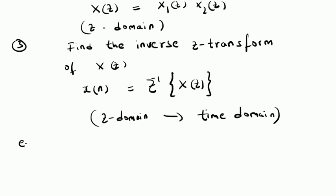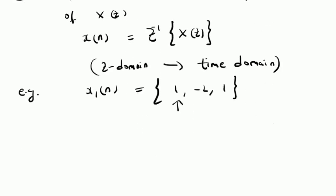Let us look at an example illustrating this algorithm. Consider a sequence x1[n] given by the values {1, -2, 1} starting at n=0. Consider another signal x2[n], which is a rectangular window from n=0 to n=5, so we have six ones. We have to find the convolution of these two signals using the Z-transform.